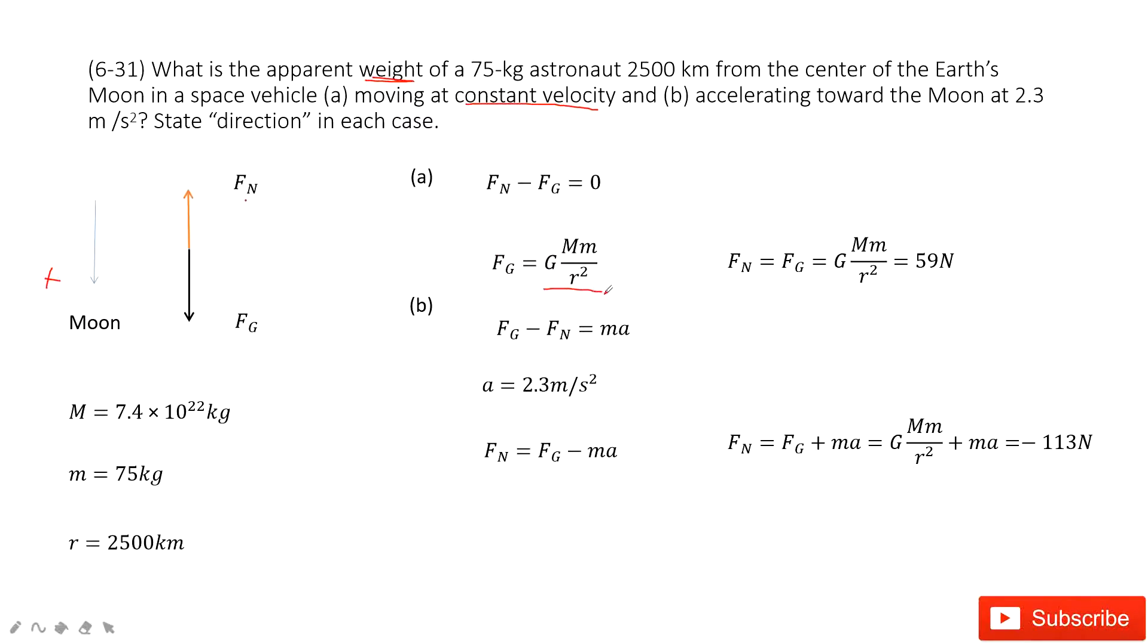We make the normal force equal to gravitational force. The gravitational force can be found using this formula. After we input the quantities, we find it is 59 newtons.